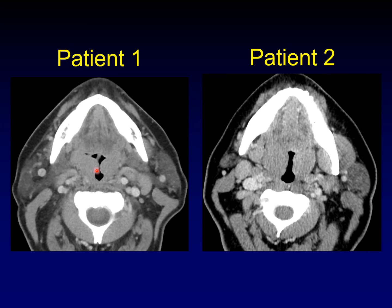Let's talk about the findings. Here we're seeing uniform symmetric enlargement of the palatine tonsils — so large they're almost touching in the center. On the other side, we see uniform enlargement of the palatine tonsils, not quite as big but pretty close. I can't tell these two patients apart. Even as I look at them now, I have trouble remembering which one has which diagnosis. So I'll go ahead and reveal it.